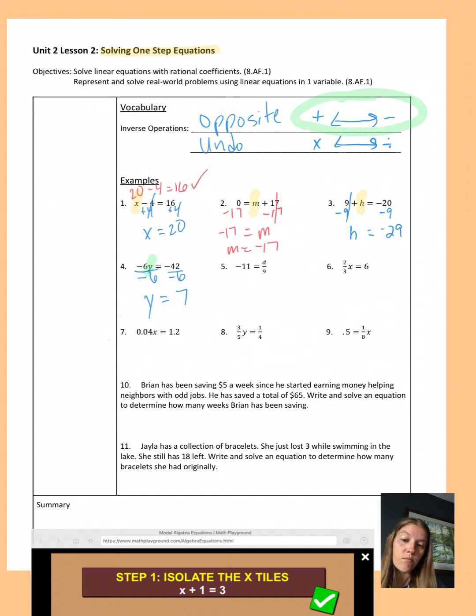Number 5. Our d is actually being divided by 9. That's what that fraction means, division. So the opposite then is to multiply both sides by 9. And if you want to, you can think of this as 9 over 1. I've got 9 over 9. 9 divided by 9 is 1. So it's again 1d. 1 times d is really just d. And 9 times negative 11 is negative 99.